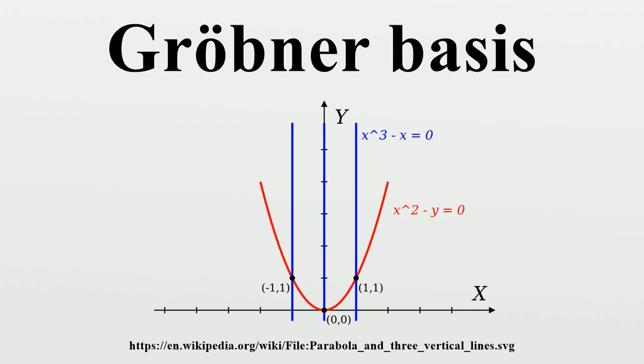A Gröbner basis is termed reduced if the leading coefficient of each element of the basis is one and no monomial in any element of the basis is in the ideal generated by the leading terms of the other elements of the basis.